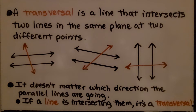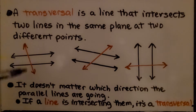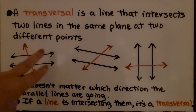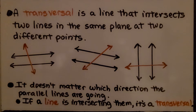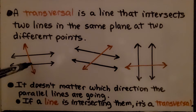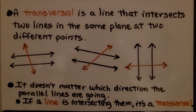A transversal is a line that intersects two lines in the same plane at two different points — it intersects here and here. It doesn't matter which direction the parallel lines are going; if a line is intersecting them, it's a transversal.